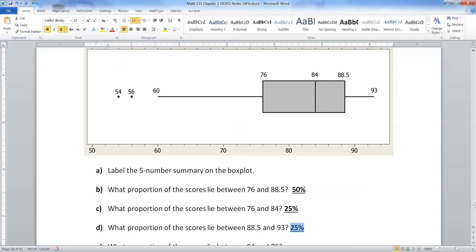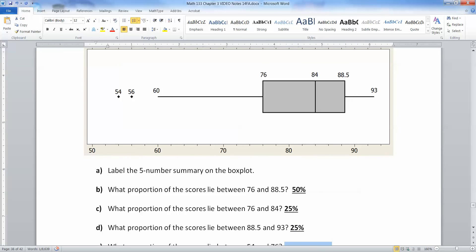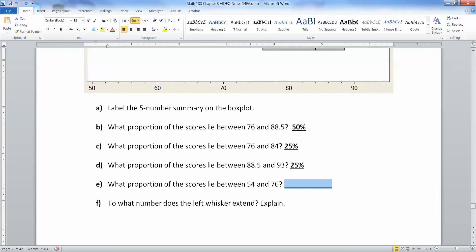This left whisker, including the two dots, 25. This left box, 25. This right box, 25. And the whisker, 25. And then 54 to 76, that's also 25%.